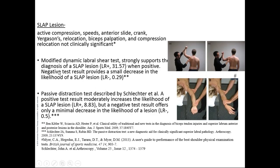For SLAP lesions there are many special tests, but two are most useful based on the literature. The modified dynamic labral shear test has a positive likelihood ratio of 31.57 and negative likelihood ratio of 0.29 — when positive, you're confident there is a SLAP lesion. The passive distraction test has a positive likelihood ratio of 8.83 and negative of 0.5. When these tests are positive, you're confident; when negative, you're in a gray zone where you cannot fully rule out the problem.